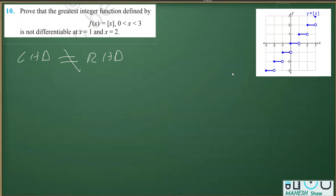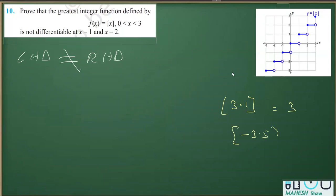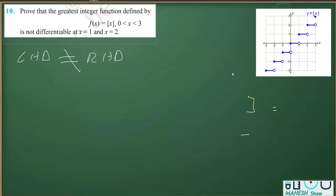You should also recollect the greatest integer function: for example ⌊3.1⌋ = 3, the integer preceding the value. Similarly, for ⌊-3.5⌋, on the number line -3.5 lies between -4 and -3, so the greatest integer function gives -4. This is what you have to keep in mind while solving this question.